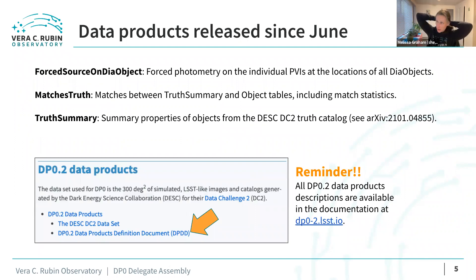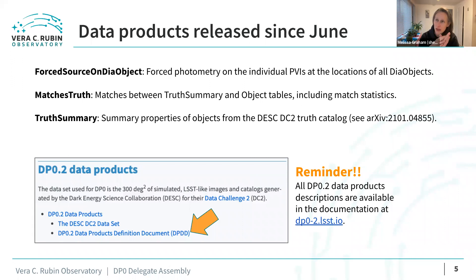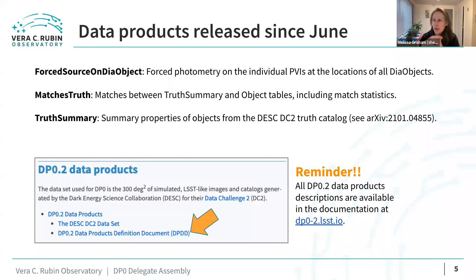We'll go into our updates on things that have been released and updated since June. Some of the data products released since June include three tables. The ForcedSourceOnDiaObject table was released a little bit after the main release at the end of June — that includes forced photometry on individual processed visit images at the locations of all DIA objects.